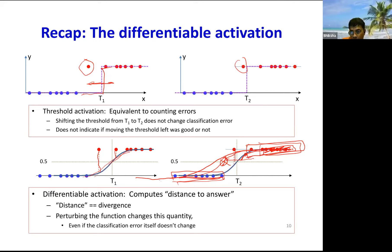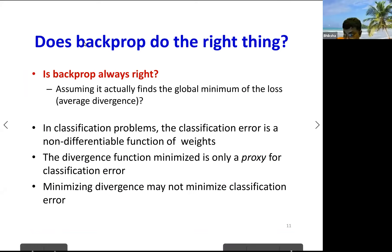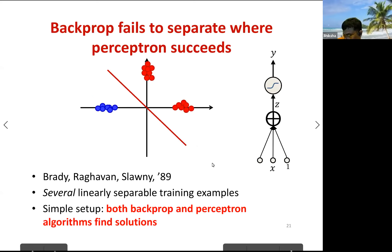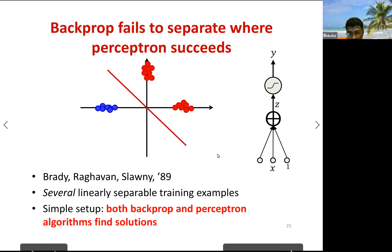Minimizing the divergence does not mean you've found the minimum classification error solution. There's a nice paper by Brady, Lagoon, and Slawny (1989) who literally ask: does backpropagation always give you the correct answer? They show that in classification problems, the classification error is a non-differentiable function of weights. The divergence minimizes only a proxy for the classification error, and minimizing the divergence may not minimize classification error.